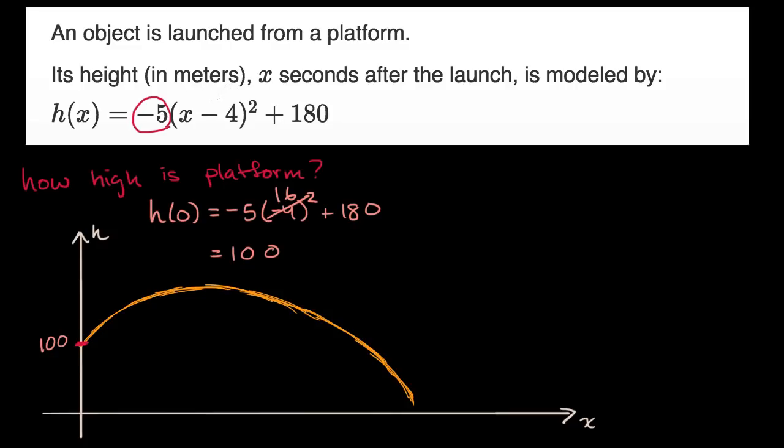Now the next question I have is, how many seconds after launch do we hit our maximum height? So our maximum height, if we're talking about a downward-opening parabola, it's going to be our vertex. And so the x value of that would tell us how long after launch do we hit the maximum height. What is this x value right over here?